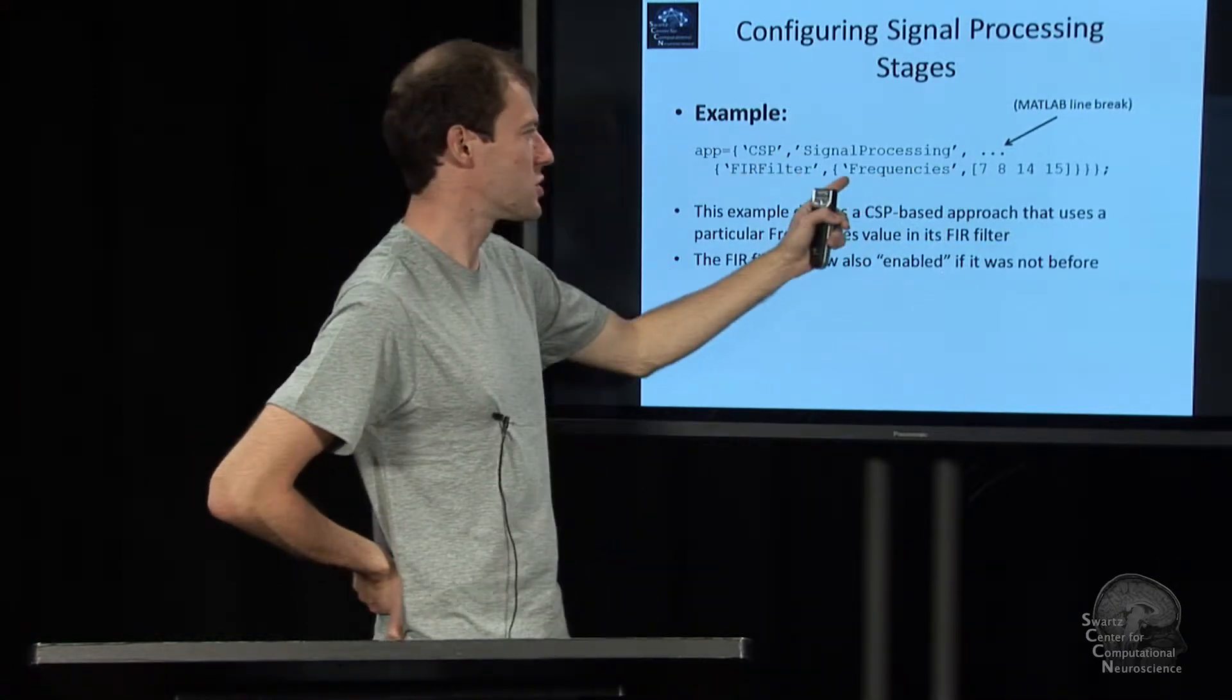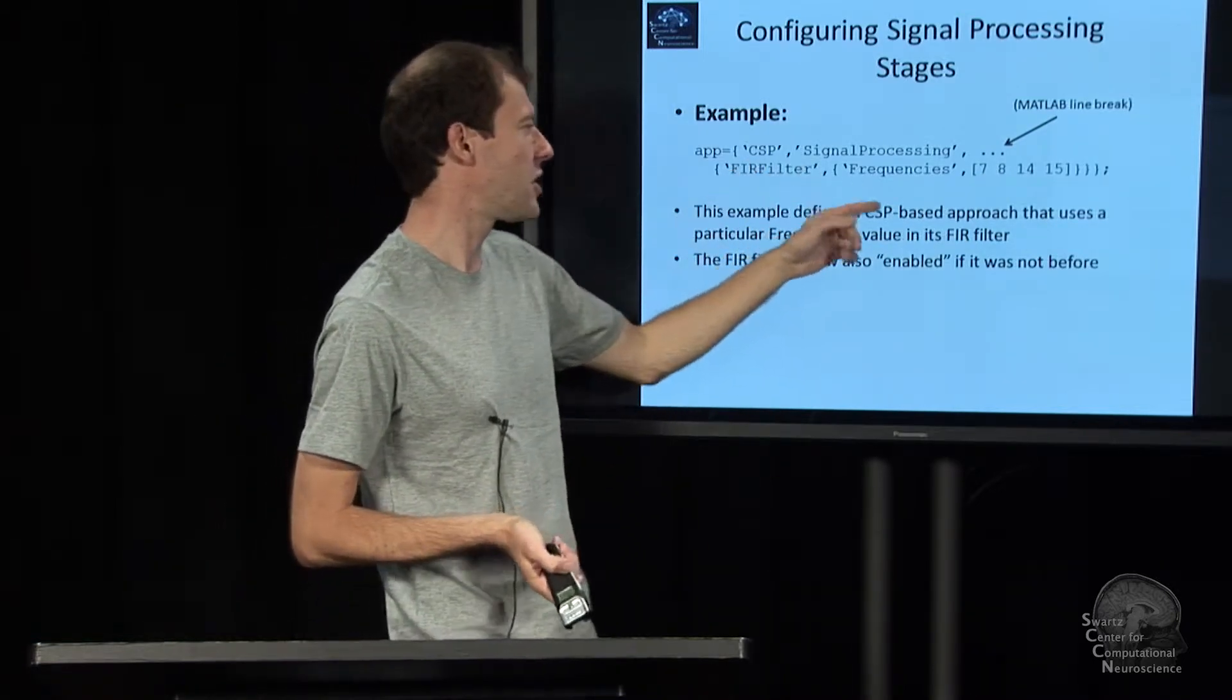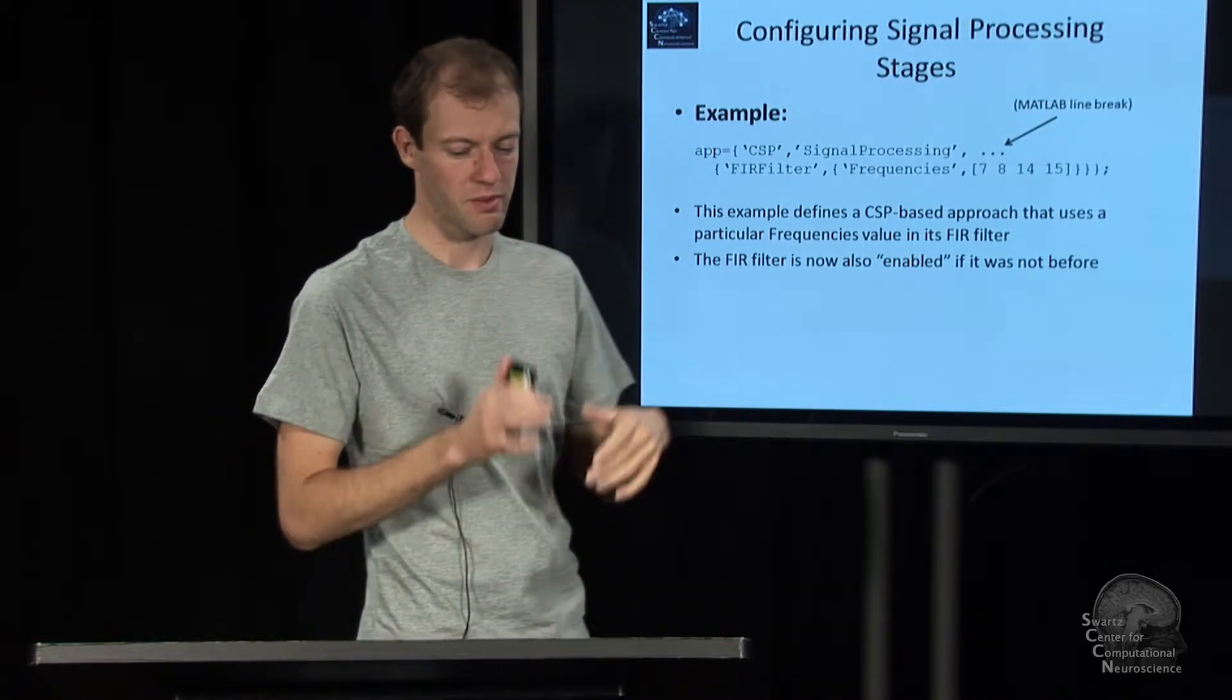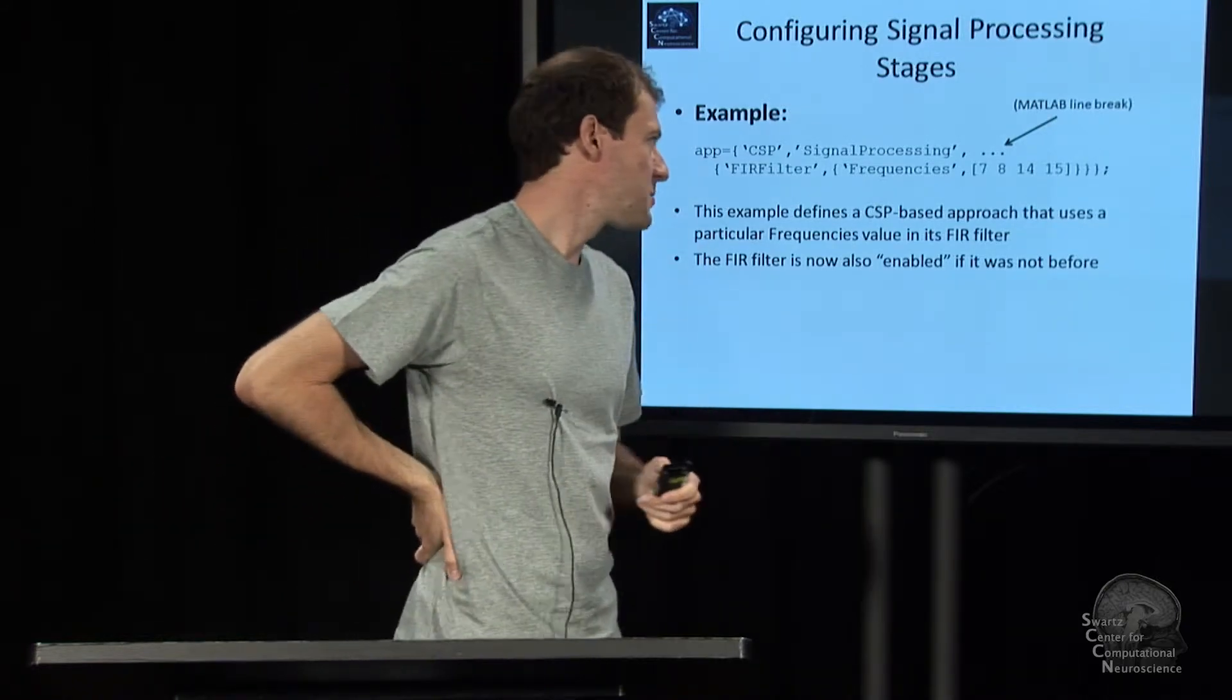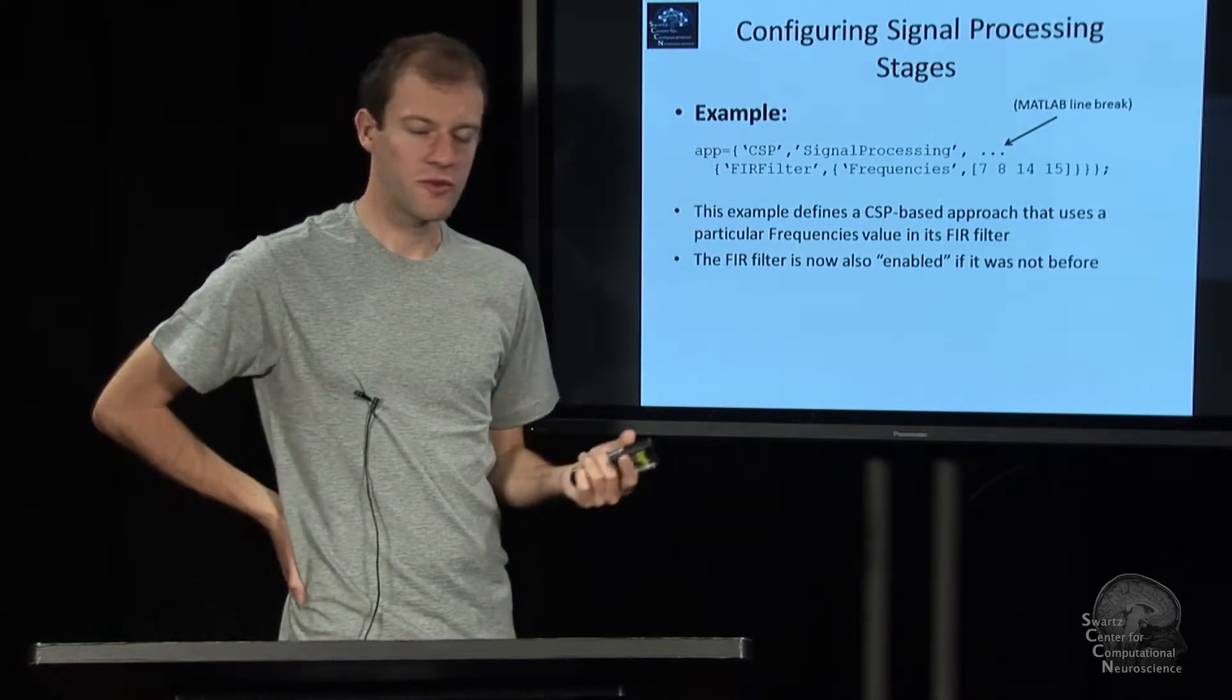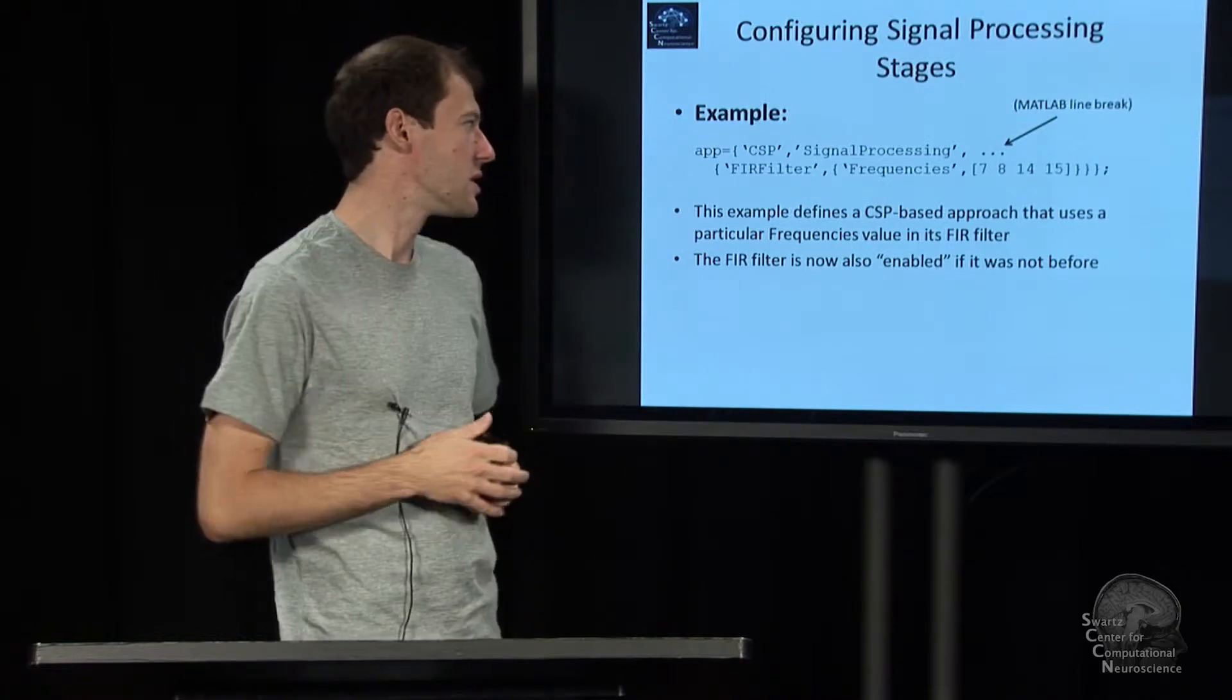This happens to have a subparameter called frequencies, and if you look at the function FLT_FIR you see this also documented. It has a bunch of others like for example is it a band pass or low pass high pass filter and so on, that's probably called filter mode. That's basically all, and also if the filter wasn't enabled in the paradigm before, now that you've specified it, it is going to be enabled, otherwise it would have empty assigned to it.